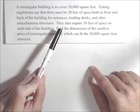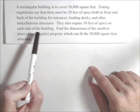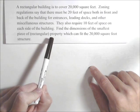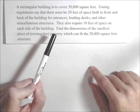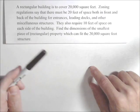They also require 10 feet of space on each side of the building. So we want to find the dimensions of the smallest piece of property which can fit the 20,000 square foot rectangular building.